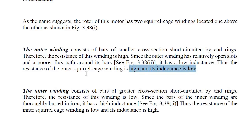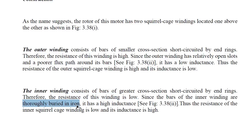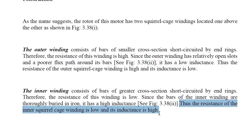The inner winding consists of bars of greater cross-section, short circuited by end rings. Greater cross-section means lower winding resistance, since R = ρl/A and R is inversely proportional to the area. Since the bars of the inner winding are thoroughly buried in the iron, it has high inductance. Thus, the inner cage winding has low resistance and high inductance. This is the basic construction of the double cage squirrel cage rotor.